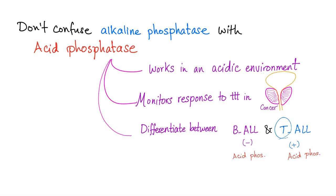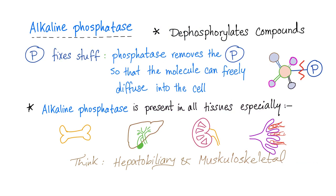The way I remember it: T looks like a plus sign, so T-ALL is positive for acid phosphatase. Now forget about acid phosphatase and focus on alkaline phosphatase, which is today's topic. Phosphatase dephosphorylates compounds, meaning it removes a phosphate group.